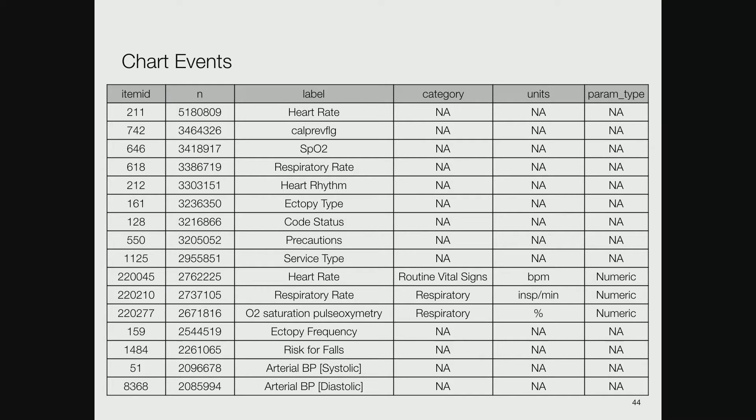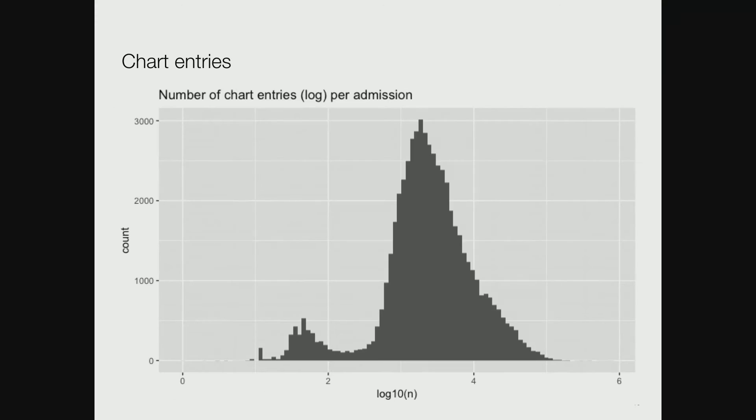Not only do we have that problem of different age distributions, but the mechanical problem that things with the same label may or may not represent the same measurement. Number of chart entries per admission on a log scale - about 10 to the 3.5 chart entries per admission, thousands of events.